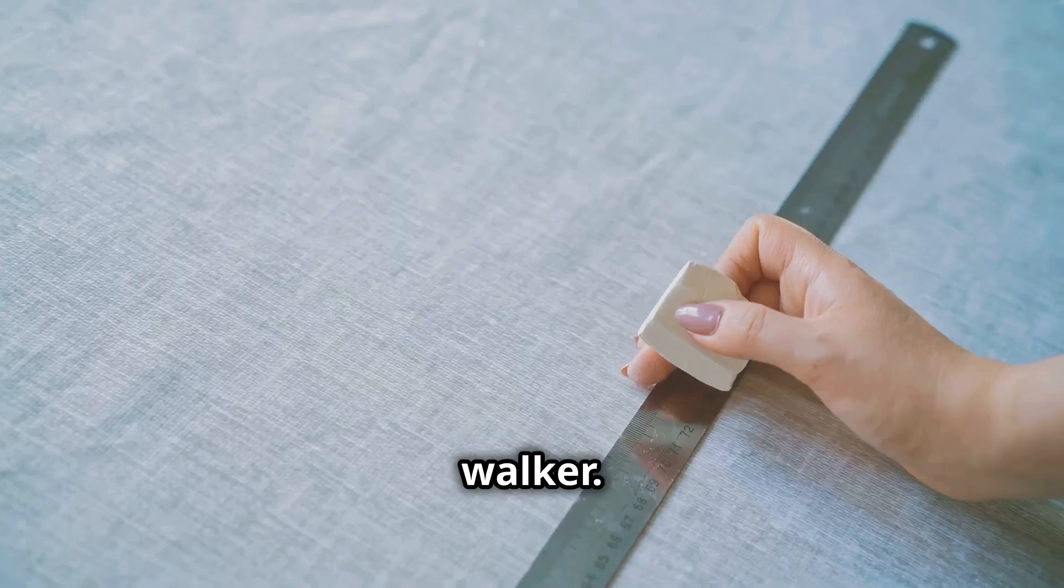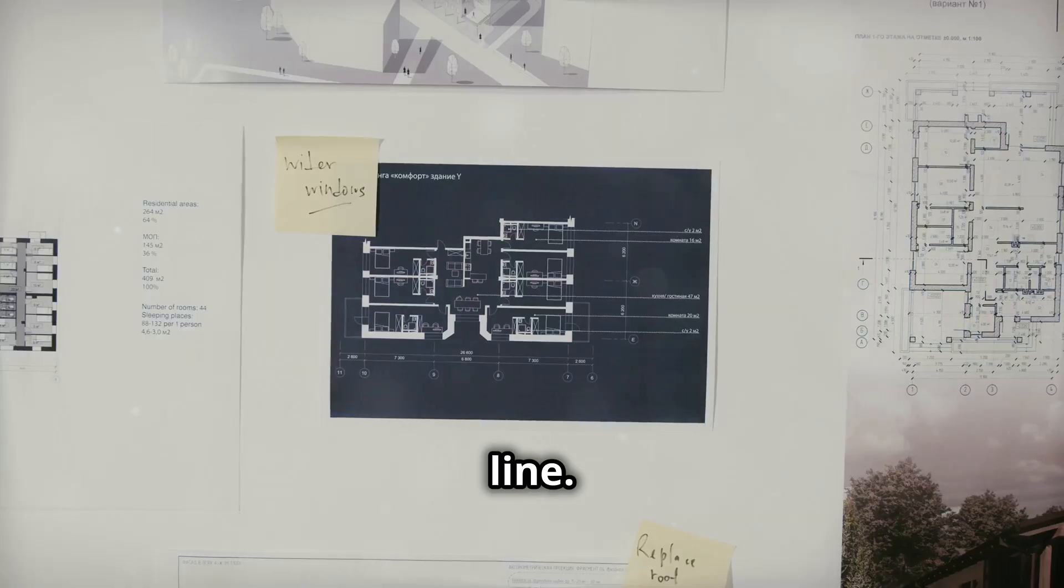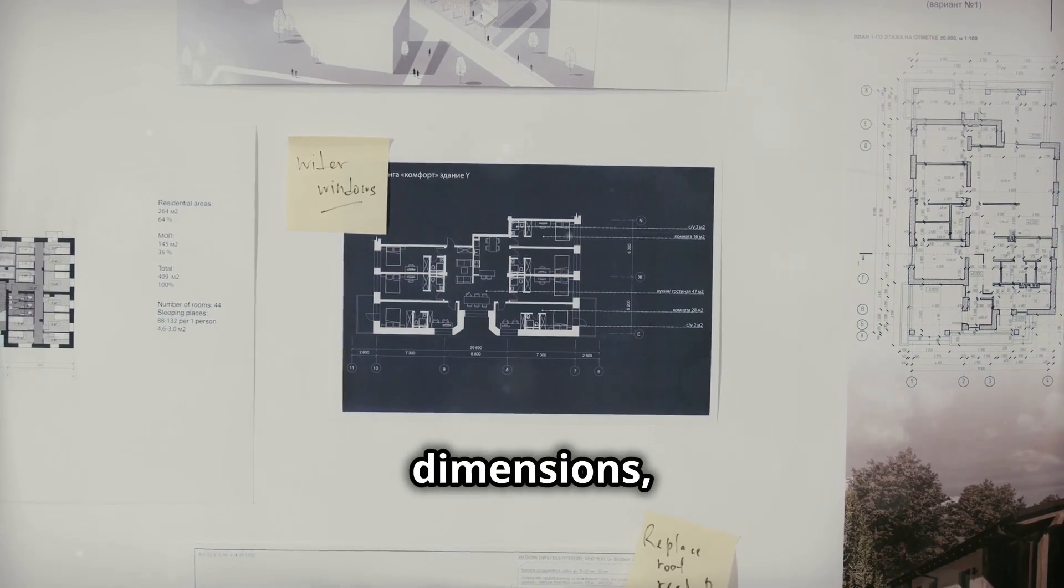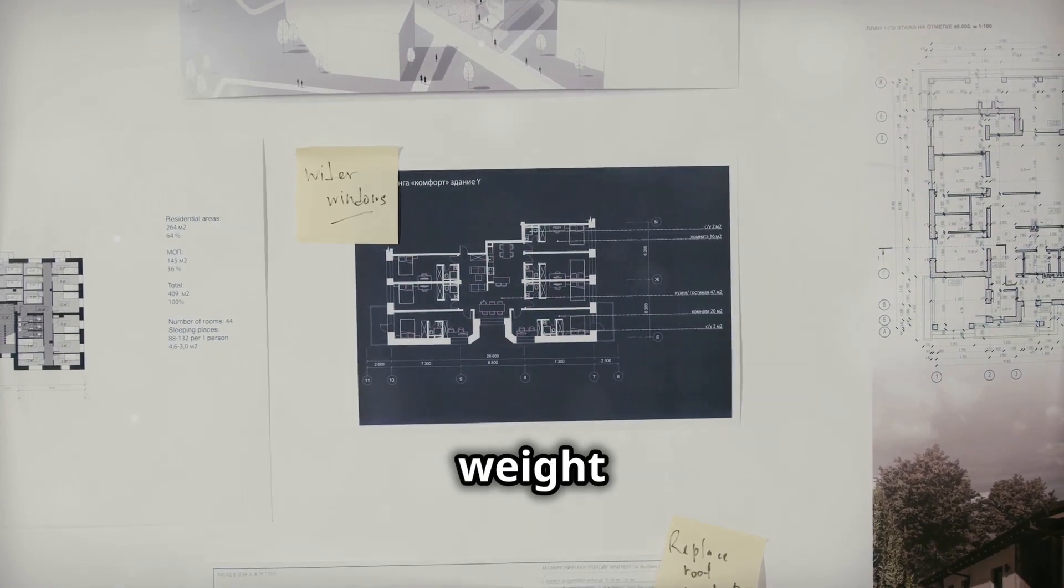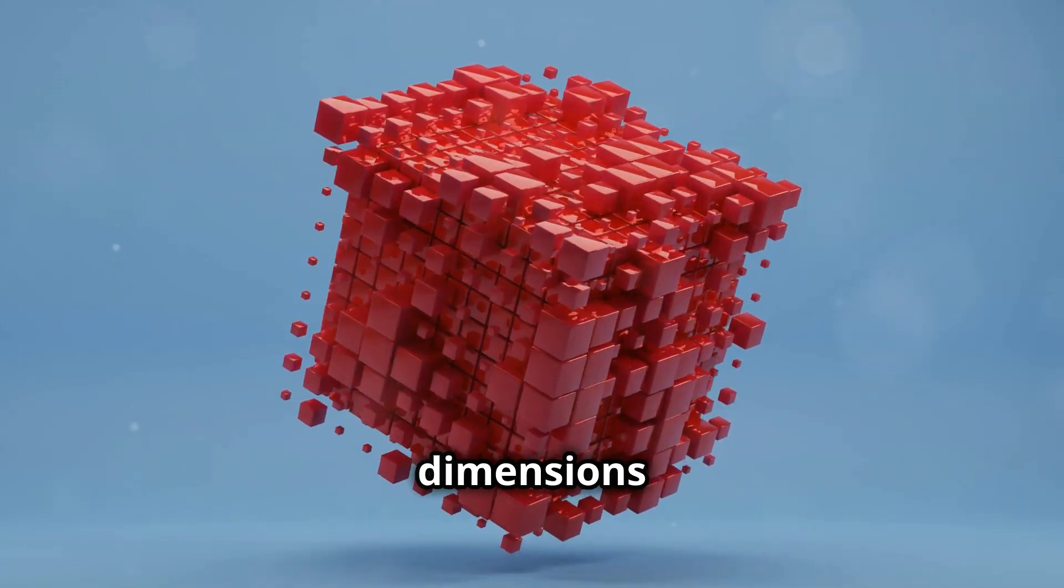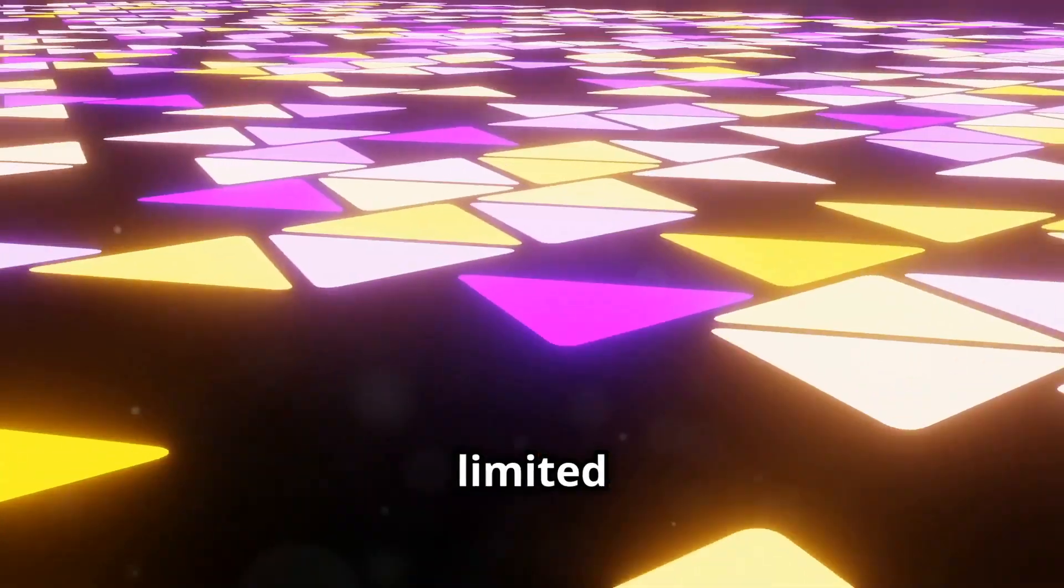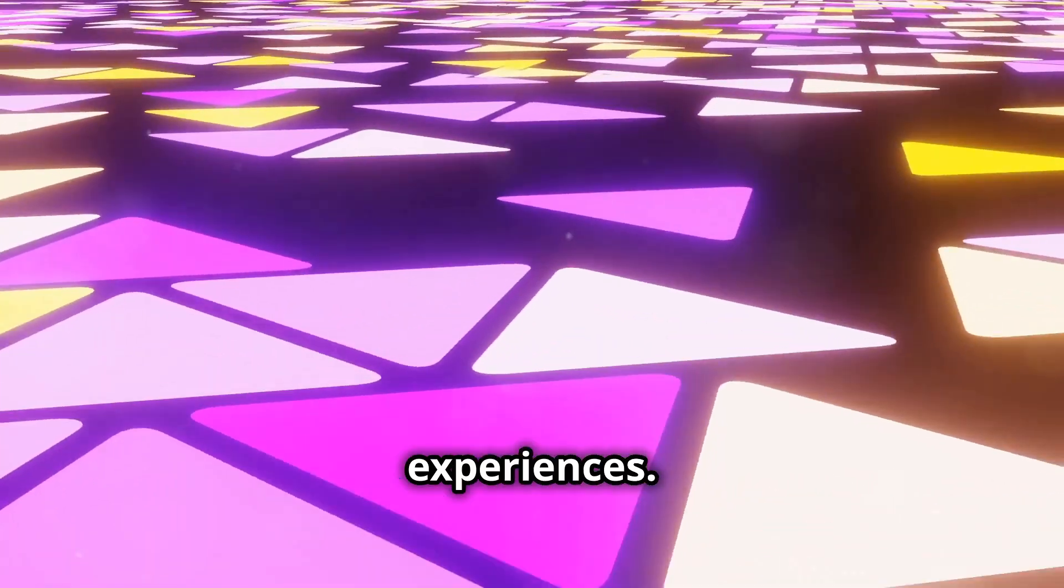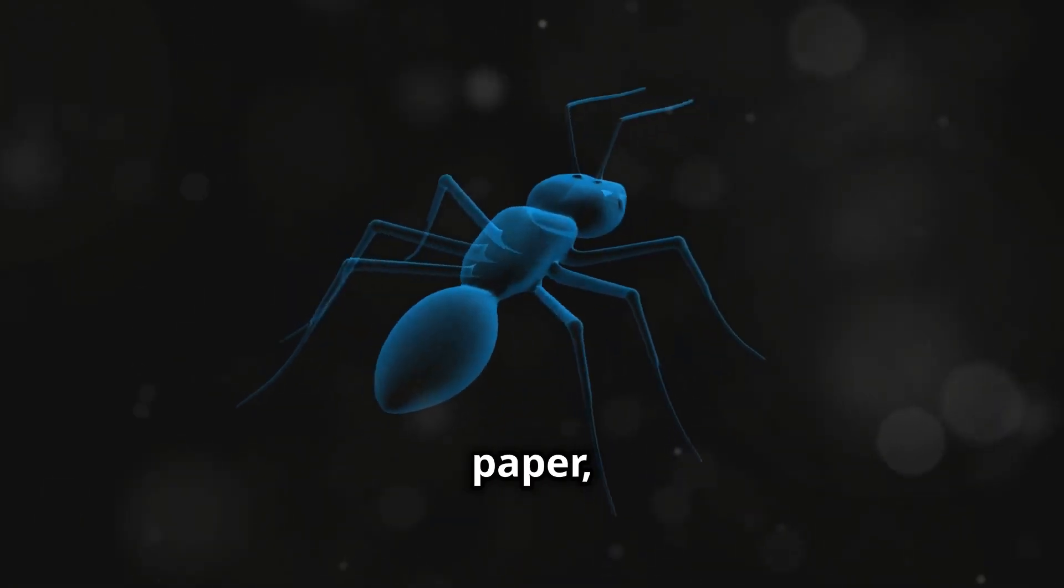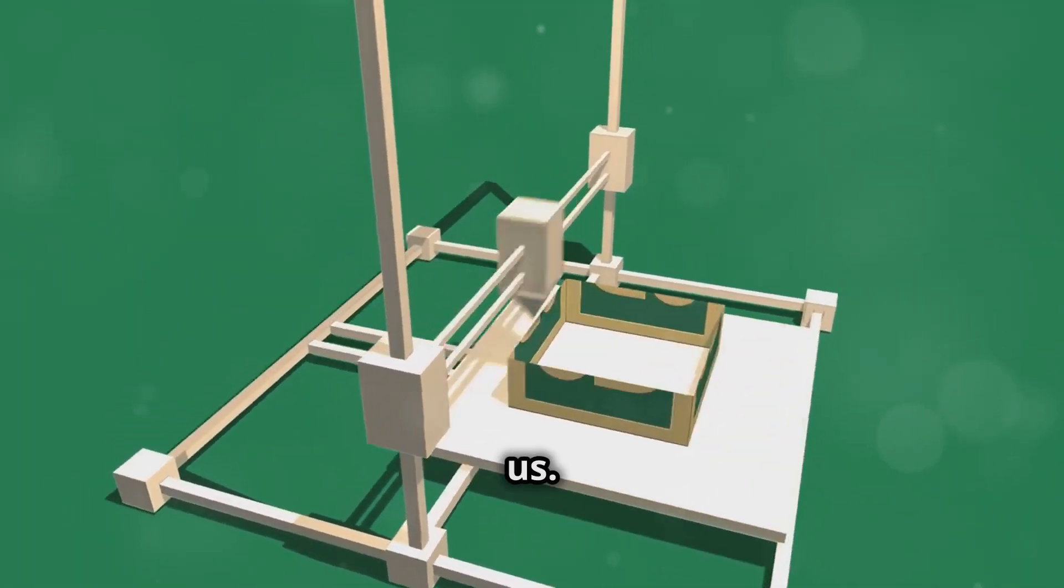Consider a tightrope walker. From a distance, he appears confined to a one-dimensional line. However, we know he exists in three dimensions, skillfully balancing his weight along the rope's length while utilizing the width and height dimensions to maintain his equilibrium. Our perception of dimensions is limited by our senses and experiences. We're like ants crawling on a flat sheet of paper, unaware of the vastness of the three-dimensional world that surrounds us.